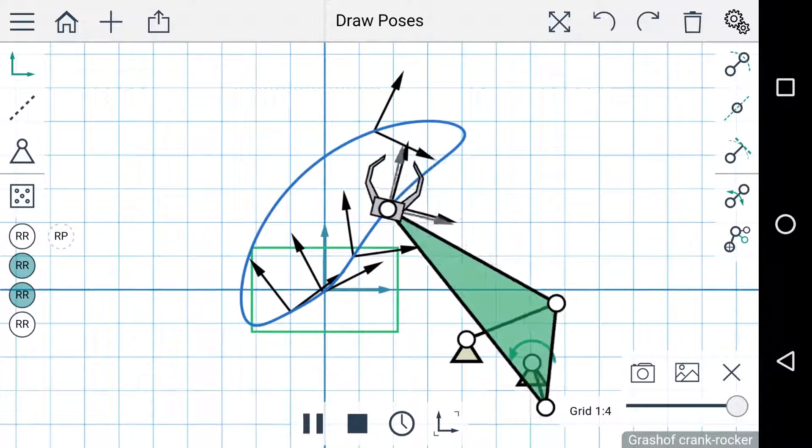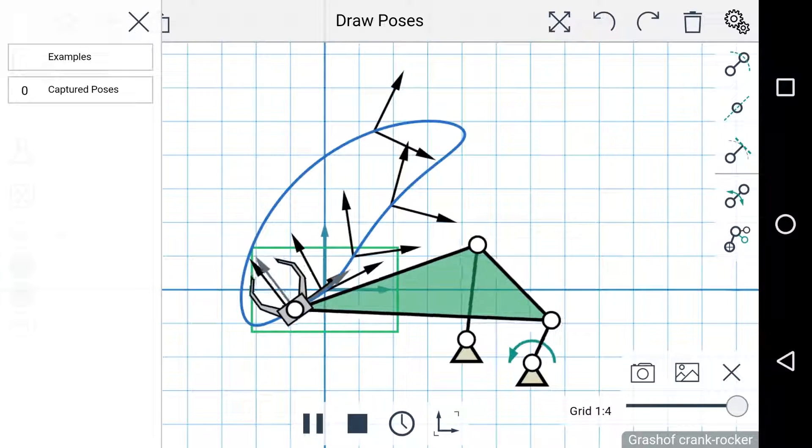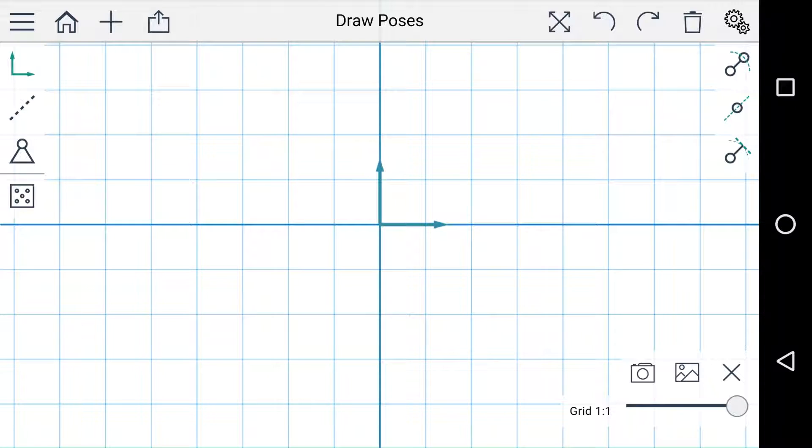The final thing in the sidebar menu is the captured poses button. To explain this I'm going to delete this linkage and reset the view and I'll create a simple 4R linkage here.